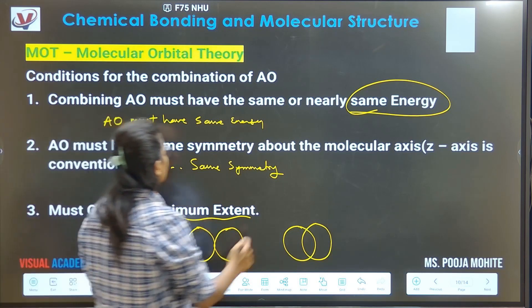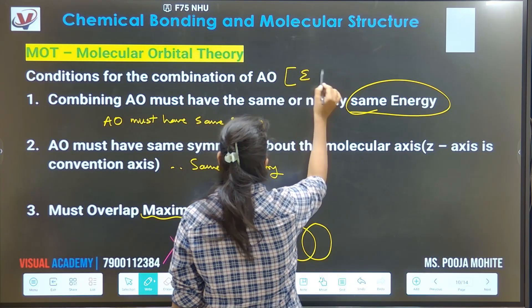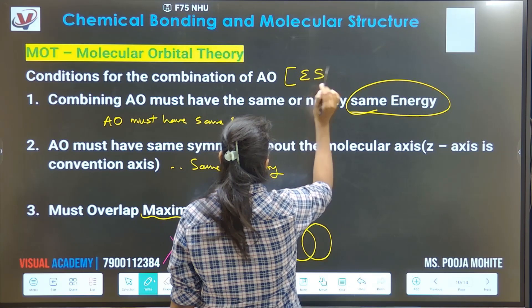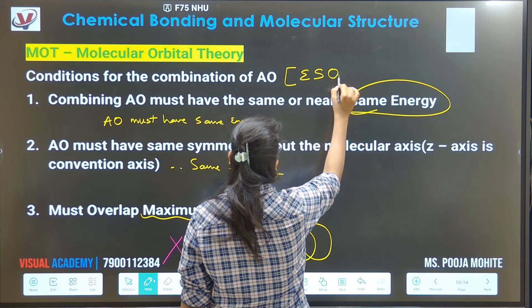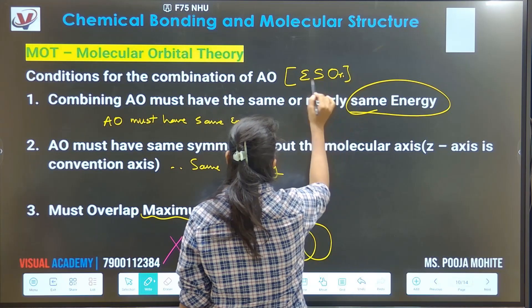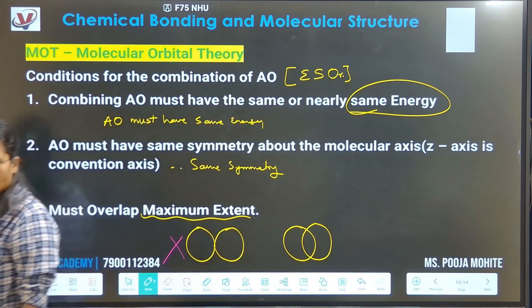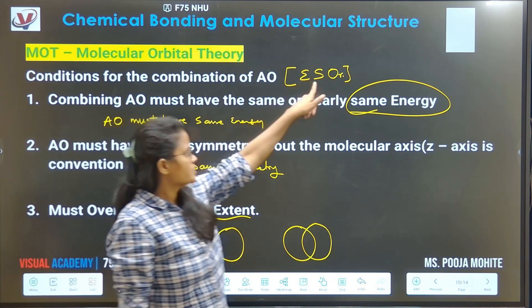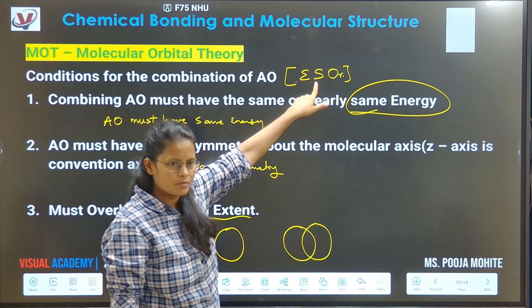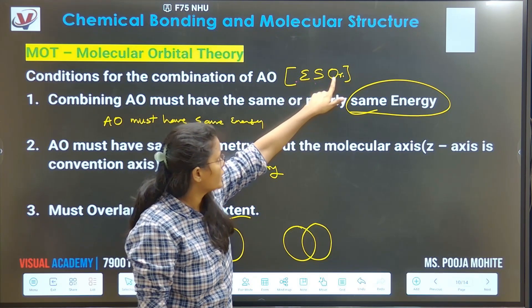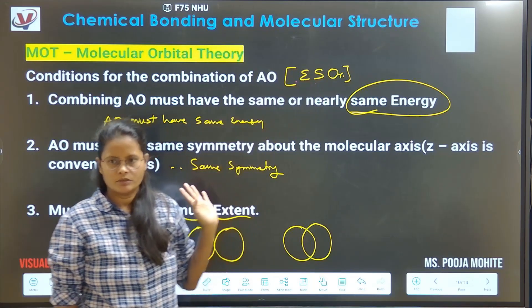You can remember this whole: your energy, your symmetry, and your orbital overlap. So you can just write down energy same, remember energy same, symmetry same, orbital overlapping more extent. So remember this word.